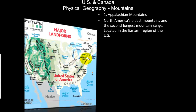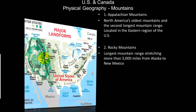The Appalachian Mountains run along the east coast in Appalachia, and the Rocky Mountains run along the west coast, forming the Continental Divide. To the west of the Continental Divide, rivers flow west; to the east, rivers flow east. The Rocky Mountains are the longest mountain range in the United States, stretching more than 3,000 miles from Alaska down into Mexico.